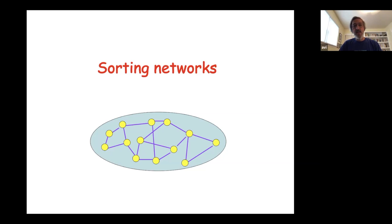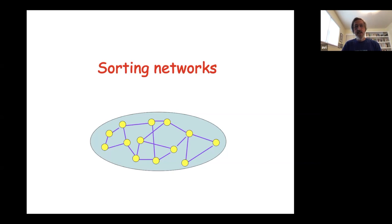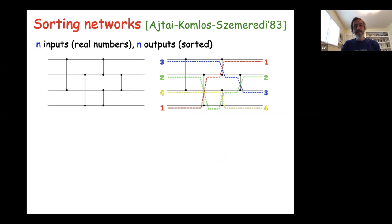Back to more applications: sorting networks. Everybody knows you can sort N numbers in N log N comparisons with many algorithms. Sorting networks differ from sorting algorithms in that they are non-adaptive: you think of inputs arriving on the left, and pairs are compared — the smaller goes to the top, the larger to the bottom — without any branching. Many sorting algorithms take N log N time, but the best sorting networks people could construct used N log² N comparators — an open problem for a long time.